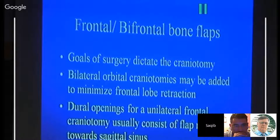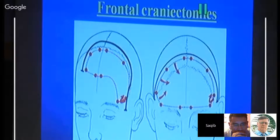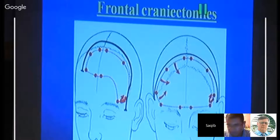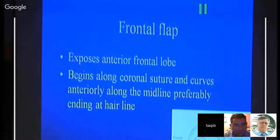For bifrontal and frontal flaps, the goal of surgery dictates the craniotomy. Bilateral orbital craniotomy may be added to minimize frontal lobe retraction. The dural flap for unilateral frontal craniotomy is usually reflected toward the sagittal sinus, and the superior sagittal sinus may have to be ligated for bifrontal approaches. Multiple burr holes are placed — on the sinus, two small burr holes on both sides, or one large one. The frontal flap exposes the anterior frontal lobe, beginning along the coronal suture and curving anteriorly along the midline, preferably extending to the hairline.